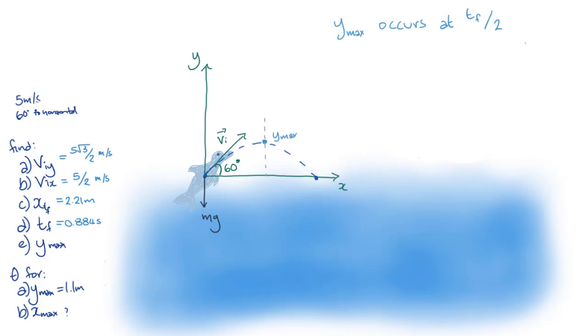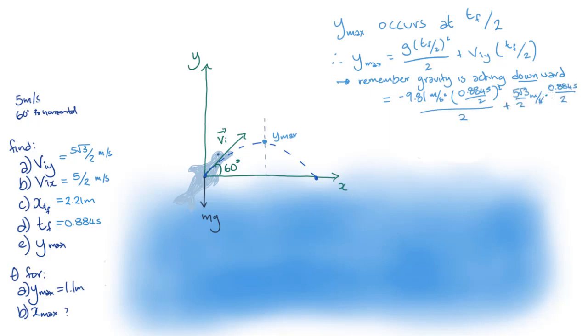This is because it'll take the dolphin just as long to go up as it will to come back down. So now we can use the equation for the vertical position to find the position at the point in time halfway through the jump, and this vertical position will be the maximum height of the jump. Substituting in our values and cancelling out units, we find that the maximum height is equal to 0.957m to 3 significant figures.